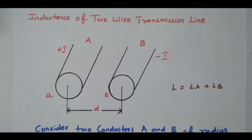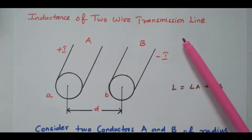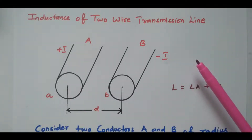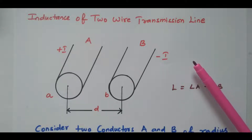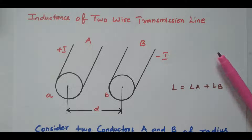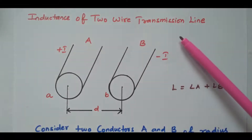Welcome viewers. In this video we will see the inductance of a two-wire transmission line, which means the overhead transmission line. In previous videos, the underground transmission line was covered — one derivation with a solid conductor and one with a coaxial line having inner and outer conductors. Those two videos refer to the underground cable. This derivation refers to the two-wire overhead transmission line.